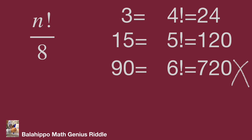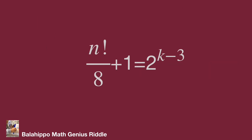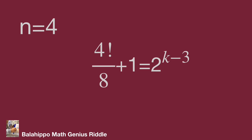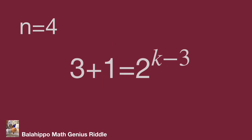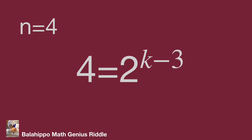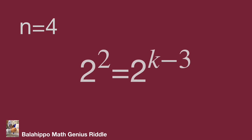Let's check them one by one. Back to the equation: n factorial over 8 plus 1 equals 2^(k−3). When n equals 4, 4! over 8 equals 3, and 3 plus 1 equals 4, and 4 equals 2 squared. So 2² equals 2^(k−3), giving k−3=2, therefore k equals 5.